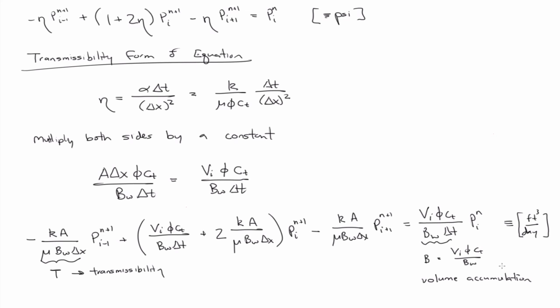So please don't confuse this B with B_W. If we're talking about formation volume factor, it'll always have a subscript associated with water, oil, and gas. So this is just a constant B. And of course, T is also here and here, and B is also here.